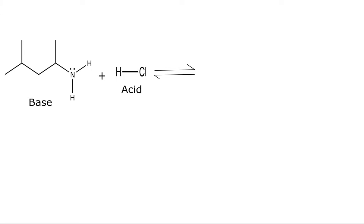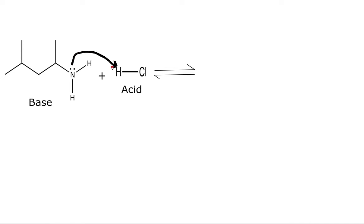We are going to use arrows to show where we are making bonds and where we are breaking bonds. We always start at our base — we start at our lone pair. We are taking this proton, and if we're only taking the proton and not those electrons, we have to show that we are breaking a bond. We will place those electrons on this chlorine. Now let's draw the other side of this equation.